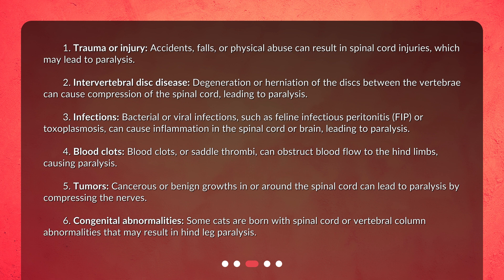3. Infections — bacterial or viral infections, such as feline infectious peritonitis (FIP) or toxoplasmosis, can cause inflammation in the spinal cord or brain, leading to paralysis. 4. Blood clots — blood clots, or saddle thrombi, can obstruct blood flow to the hind limbs, causing paralysis.